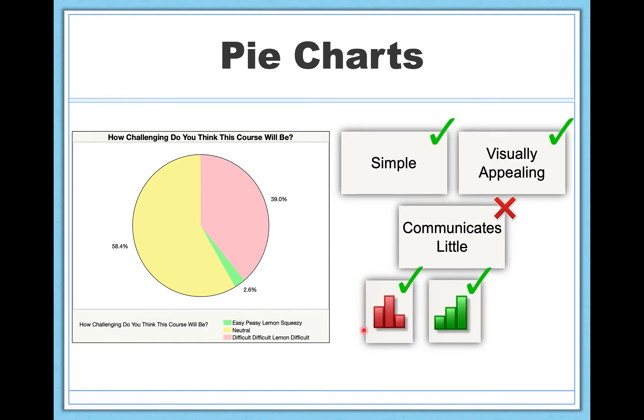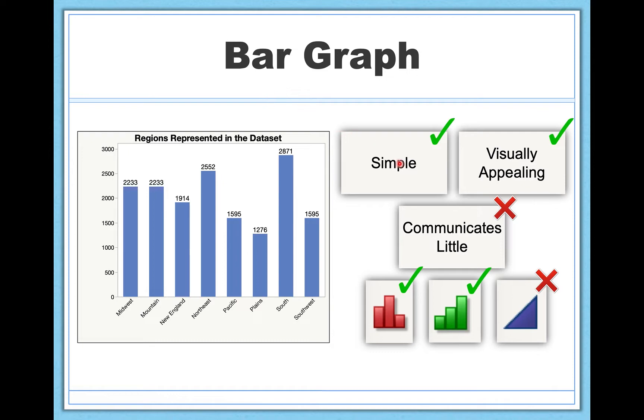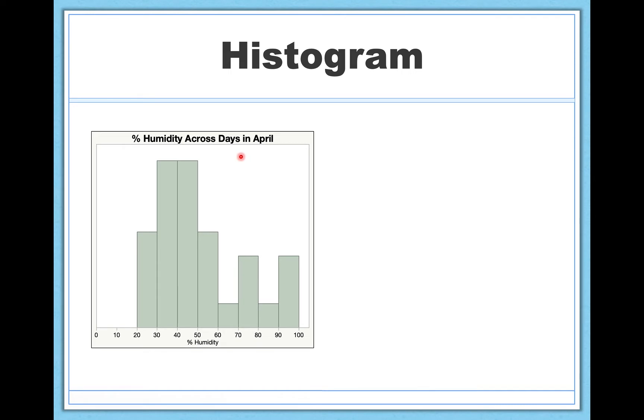Pie charts are appropriate for nominal and ordinal data. It has to be different categories of things. It's not really appropriate for interval or ratio, continuous data. So next, we're going to talk about the bar graph. And you're going to see the bar graph actually has the same strengths and weaknesses as the pie chart. And it's also appropriate for the same types of data, the same scales of measurement here. So bar graphs are nice because, you know, again, visually appealing, the height of the bar tells you something very clearly. This is an example of how many participants in my data set are from each of these different regions, each of these different categories on the x-axis. And if that's all I want to tell you, perfect. Bar graph is a great way to do it. If I want to tell you something more, again, I'm going to have to use something else.